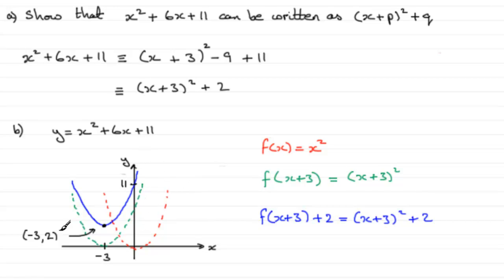We weren't expected to put the minimum point down, but we were expected to put the y-intercept down. And that's how you can sketch quadratic graphs using completing the square. I've got several examples and tutorials on this on my website — just have a look under completing the square and how it can be used.